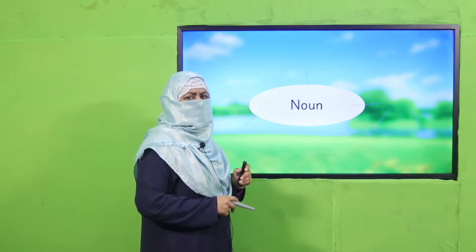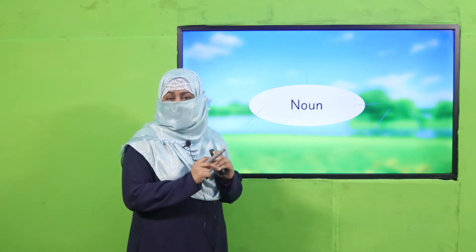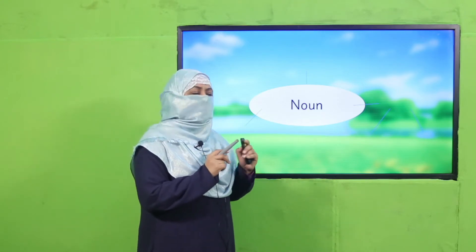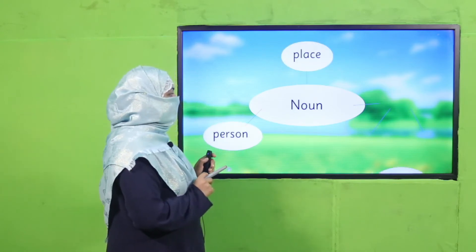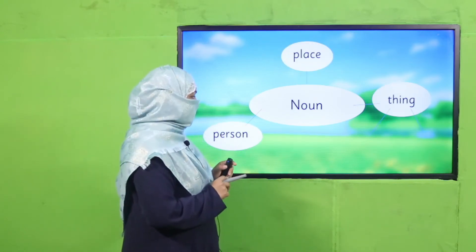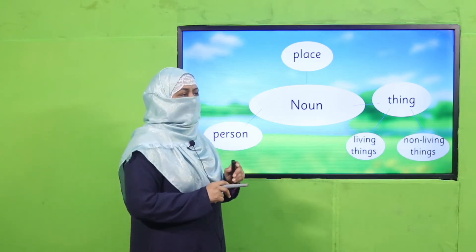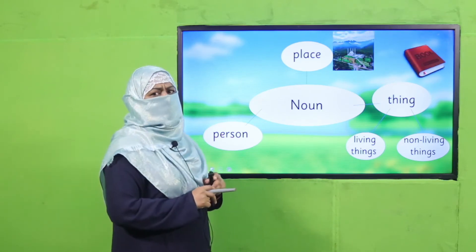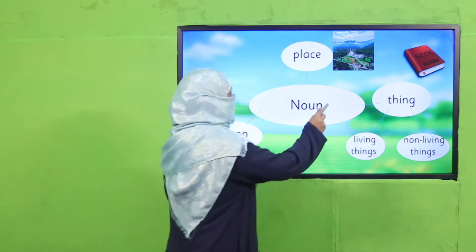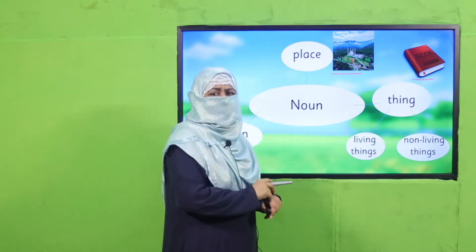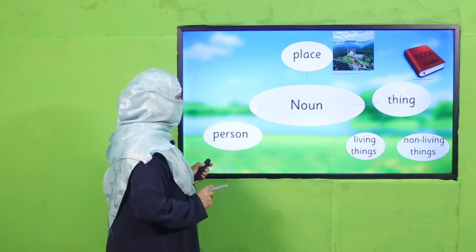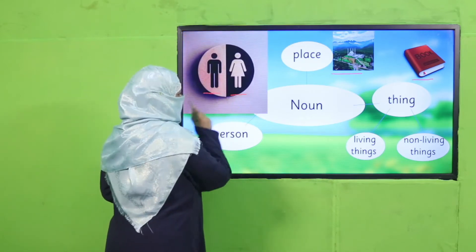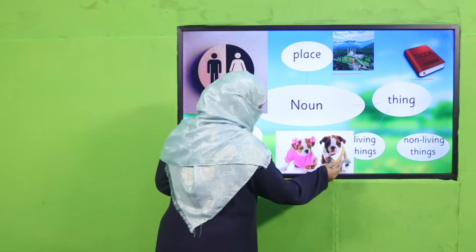What are nouns? Everything around us has a name — things we can see, hold, touch, or feel — that is a noun. We classify nouns into person, place, and thing, and we further classify things into living and non-living. When we talk about a place or a non-living thing, they don't have a mama and baba — they don't have gender — so they are called neuter gender.